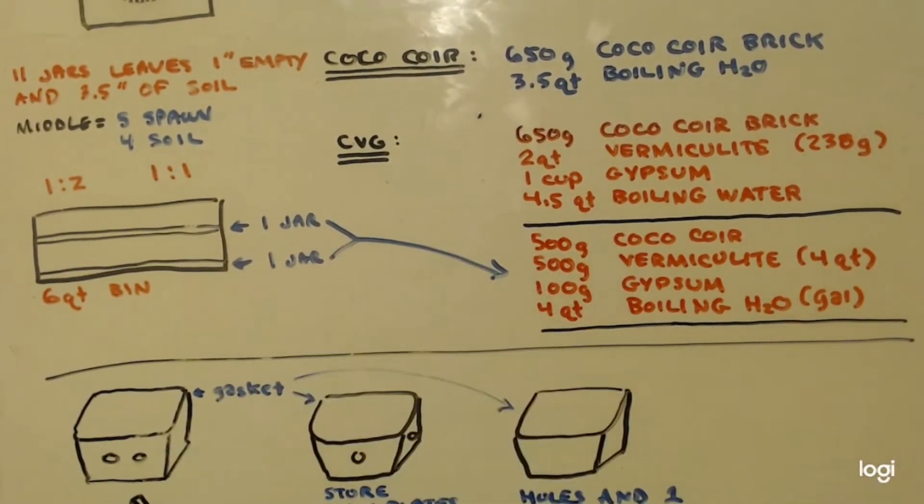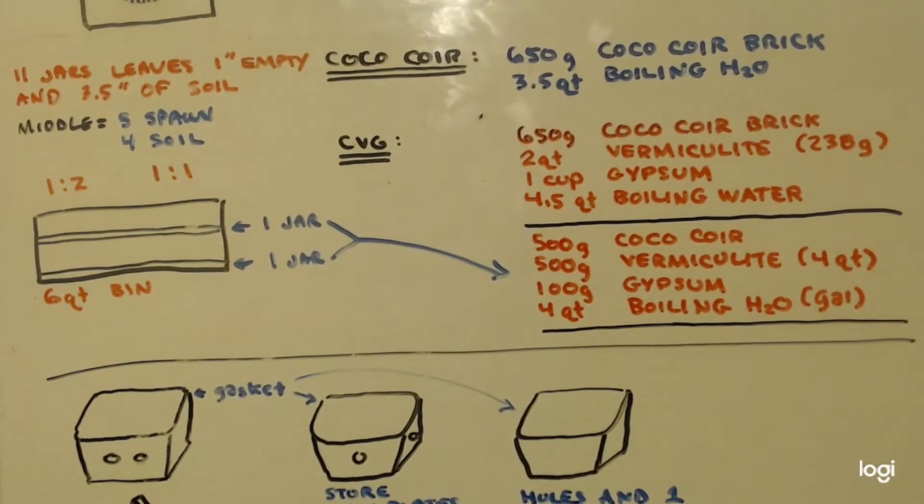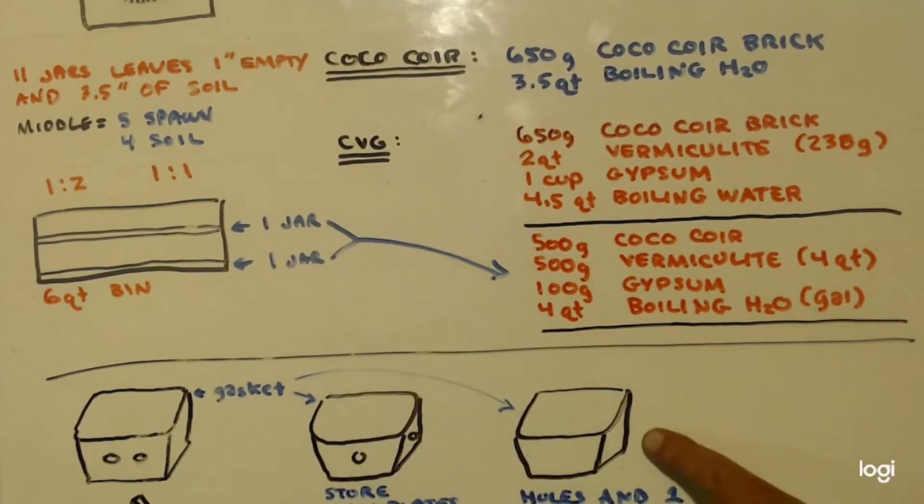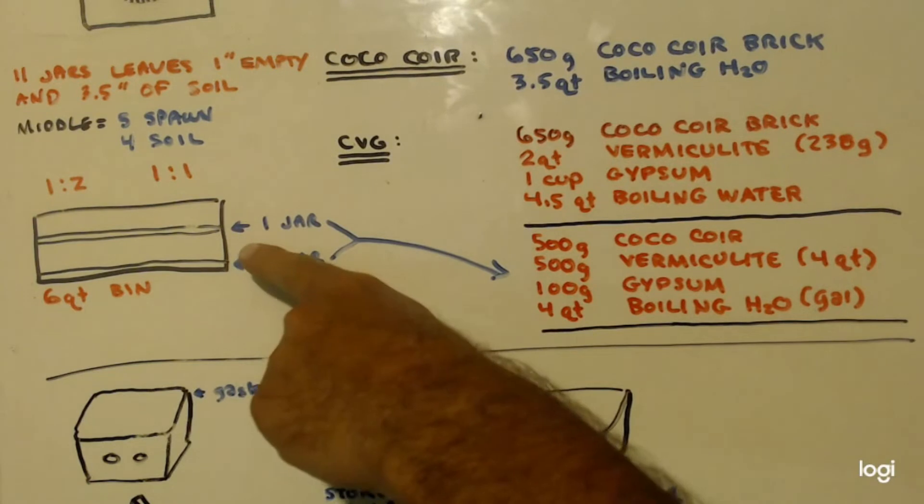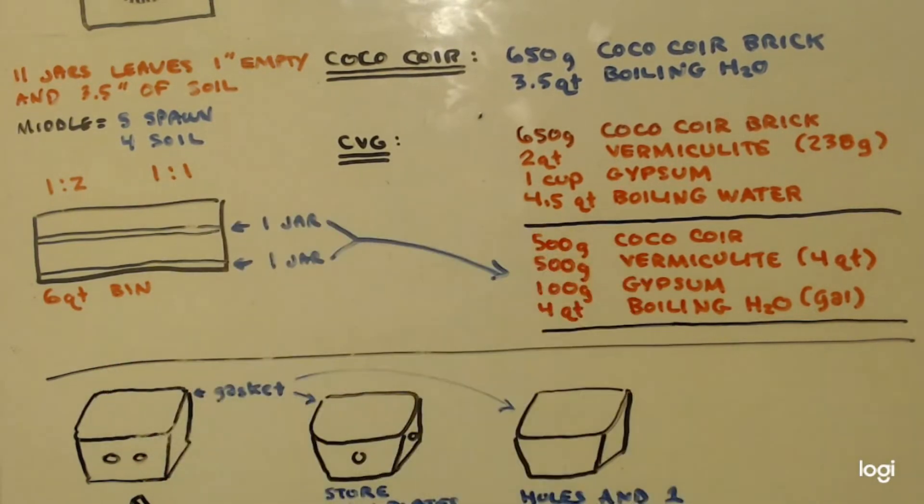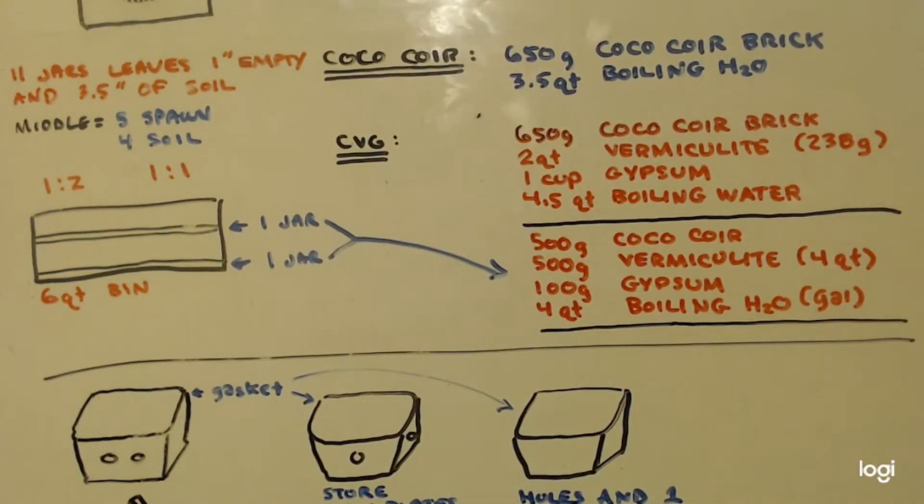Before you put the lid on this six quart bin and put it into the bigger bin, you want to spray down the soil, the sides of the bin, and the lid of this six quart thing. Then put the lid on and you can put it in here. The lid doesn't have a gasket on this six quart bin, so it's going to be able to breathe but it'll help keep contamination out.